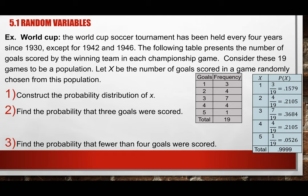You might notice the probabilities sum to 0.999 rather than exactly 1. This is because these are rational numbers and we round them — the decimal keeps going, so we're off by about 0.0001. It's close enough. The rounding is why the total is not exactly 1, but we can still use this as a probability distribution.